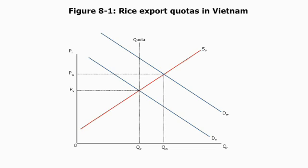Essentially, removing the quota expanded the market for Vietnamese rice, allowing them to sell a larger quantity at a higher price on the worldwide market. The difference between q sub v and q sub w represents exports — the government allowed them to export an extra amount of rice, q sub w minus q sub v, and obtain a higher price for their rice.